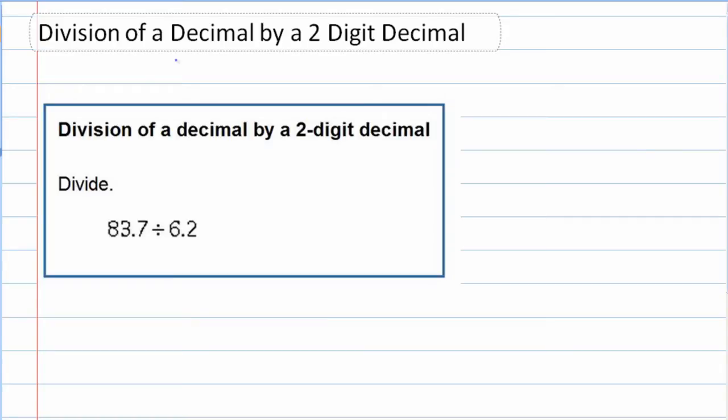Division of a decimal by a two-digit decimal. This time we're looking at a decimal divided by a decimal. You can see in our example we have 83.7 divided by 6.2, so both numbers are decimals.